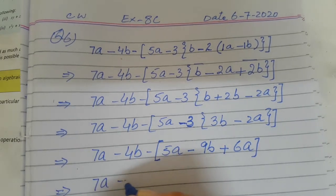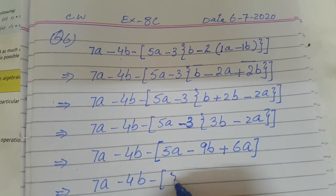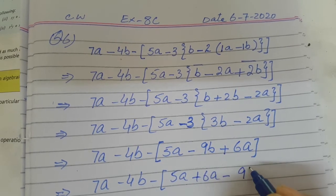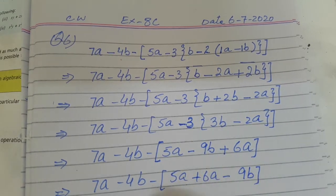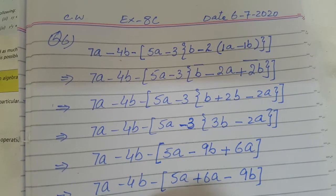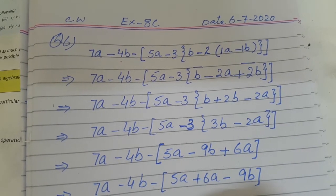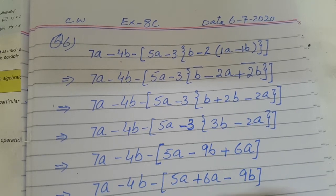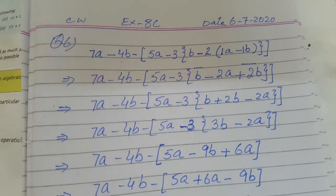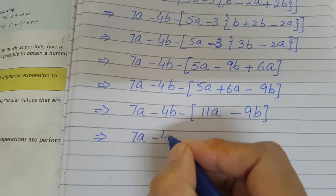Now inside the square bracket we arrange the like terms: 5a plus 6a and minus 9b. Both 5a and 6a are positive, so we add them: 5a plus 6a gives 11a. So inside the square bracket we now have 11a minus 9b, with the previous terms 7a minus 4b outside.